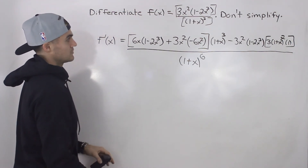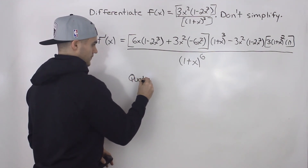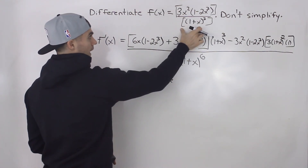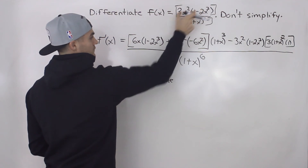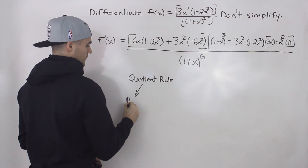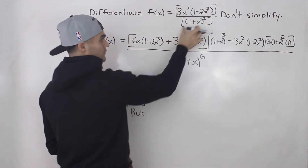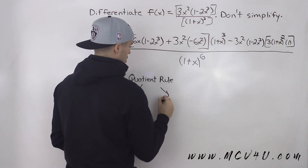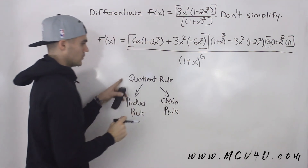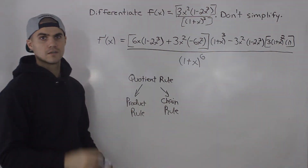So just as a recap: what we did was we first applied the quotient rule, because it's a function over another one. However, when we took the derivative of the numerator function in the square bracket, we had to apply the product rule. And when we took the derivative of the denominator function, we had to apply the chain rule. So we start with the quotient rule, and then within the quotient rule we apply the product rule and the chain rule.